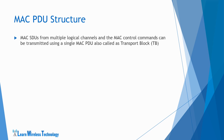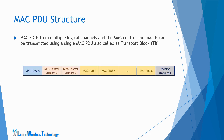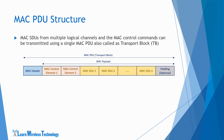MAC PDU is also called a transport block, which is carried by the transport channels. A MAC PDU corresponds to a transport block which consists of a header, control elements, MAC SDUs, and padding. At the MAC layer, multiplexing takes place which allows MAC SDUs from multiple logical channels and MAC control commands to be transmitted using a single MAC PDU or transport block. The MAC layer is responsible for the mapping of multiple logical channels to transport channels during transmission, and during reception it is responsible for demultiplexing and mapping transport channel data to logical channels.